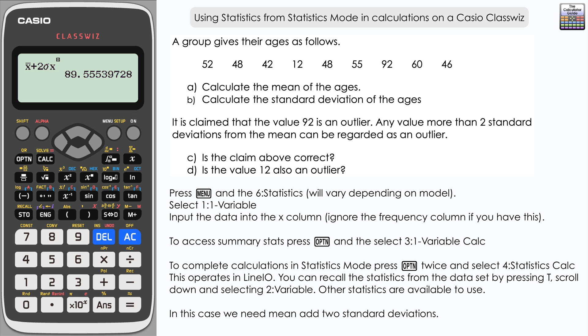We compare that with the value 92. Well, 92 is greater than that. It's outside of two standard deviations from the mean, and therefore it is an outlier.